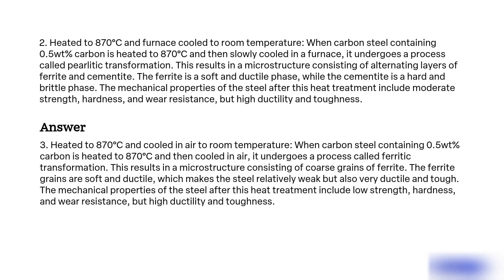3. Heated to 870°C and cooled in air to room temperature. When carbon steel containing 0.5% carbon is heated to 870°C and then cooled in air, it undergoes a process called ferritic transformation. This results in a microstructure consisting of coarse grains of ferrite. The ferrite grains are soft and ductile, which makes the steel relatively weak but also very ductile and tough.